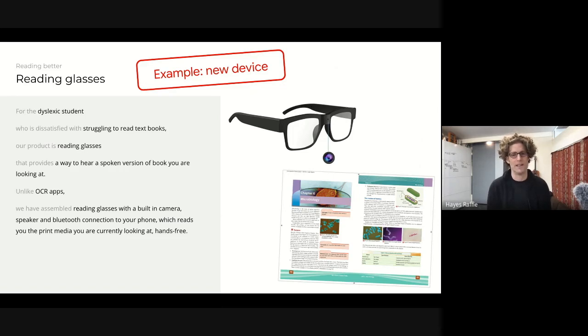Our product is reading glasses that provide a way to hear a spoken version of the book you're looking at. Unlike OCR applications, we've assembled reading glasses with a built in camera, speaker and Bluetooth connection to your phone, which reads you the print media you're currently looking at hands-free. So I've shown you one software product and one hardware product that are both aimed at helping someone do their homework better.